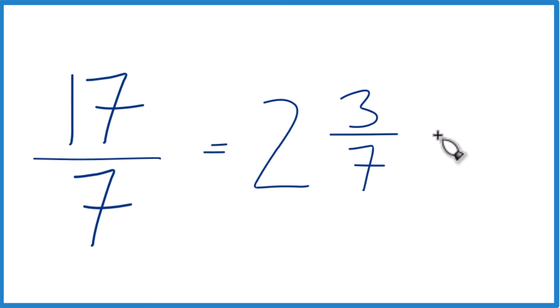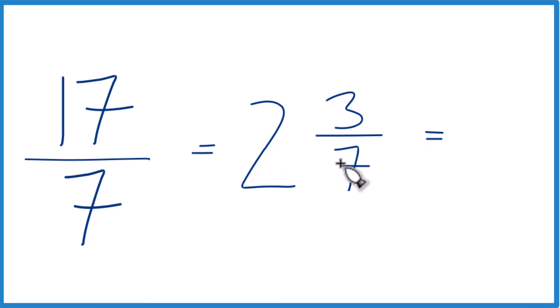It's a good idea to check your work here. So we could just take 2 times 7 is 14, plus 3. 14 plus 3, that's 17. And then we keep the 7 the same here. And you can see we have 17 sevenths, which is what we started with.